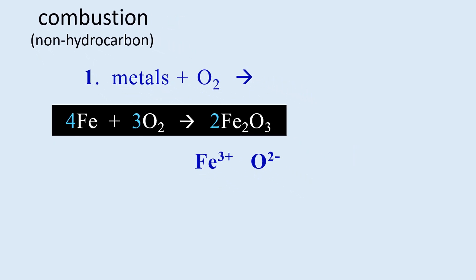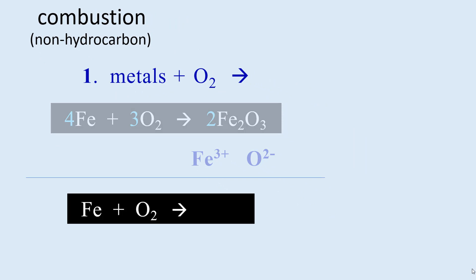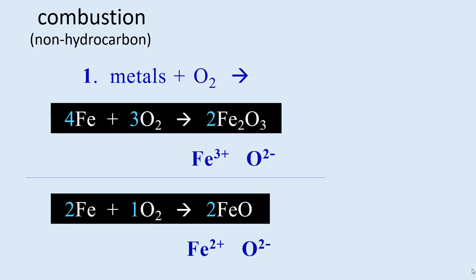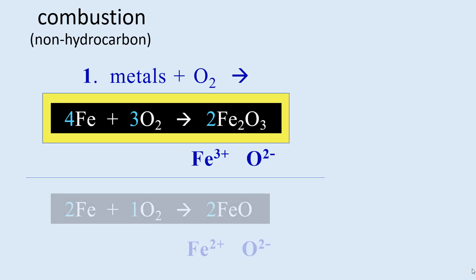Under different reaction conditions, metals can form less favorable charges, such as 2+ for iron. In this case, the product would be FeO with these coefficients. Without knowing which charge a transition metal will have, assume it will take on the most stable charge, which can be looked up in a textbook or on the internet.